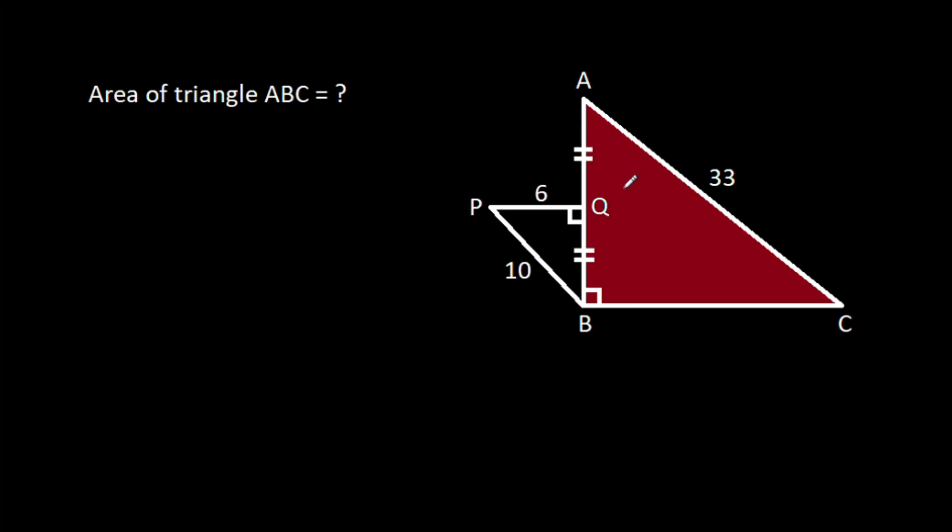In this video, we have been given that angle ABC is 90 degrees, angle PQB is 90 degrees, AQ is equal to BQ, PQ is 6, PB is 10, AC is 33, then we have to find the shaded area.